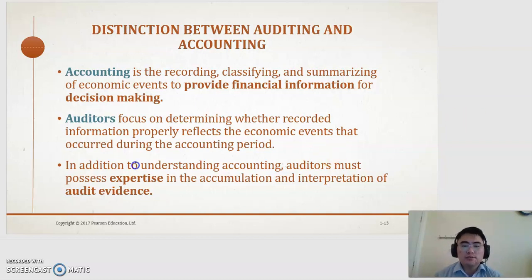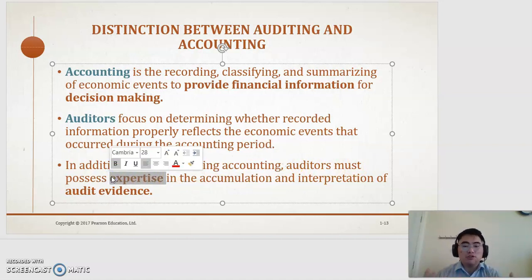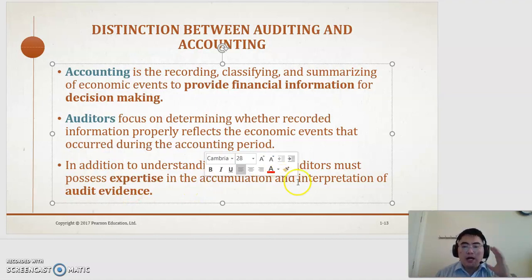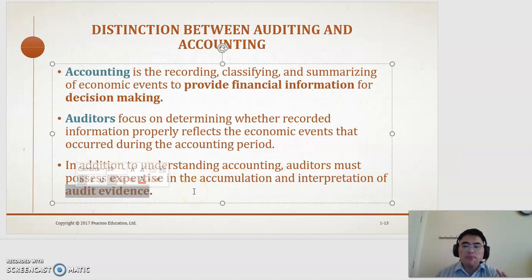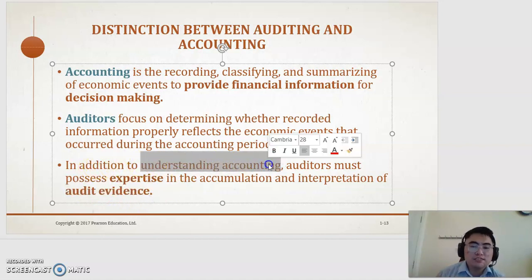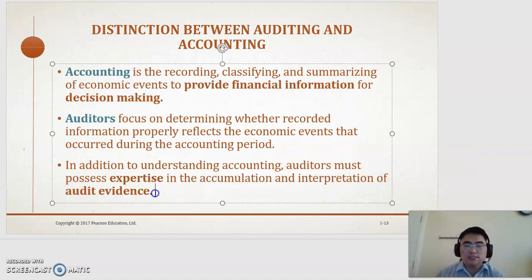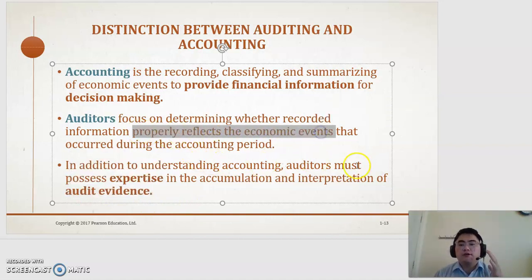In addition to understanding accounting, the auditor must possess expertise. They have to be expert in accounting as well, and of course, the auditor must accumulate and interpret audit evidence. Because to determine whether the information is already proper with the economic events, you need audit evidence. So in addition to understanding accounting, auditors must possess expertise in the accumulation and interpretation of audit evidence — to make sure the information properly reflects economic events.